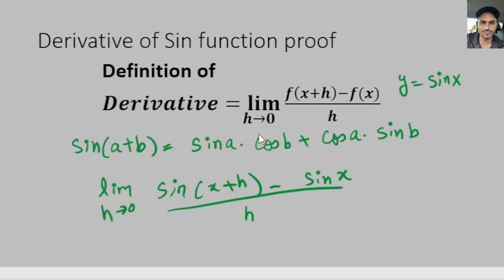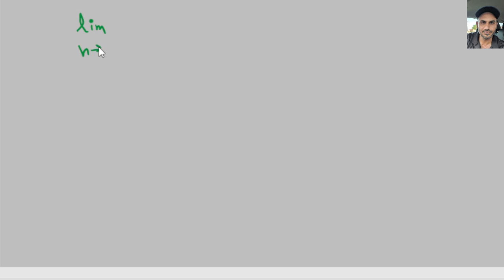Now I'm going to go ahead and apply that identity and expand sine of (x + h). We get the limit as h goes to 0 of sine of x times cosine of h plus cosine of x times sine of h, minus sine of x.